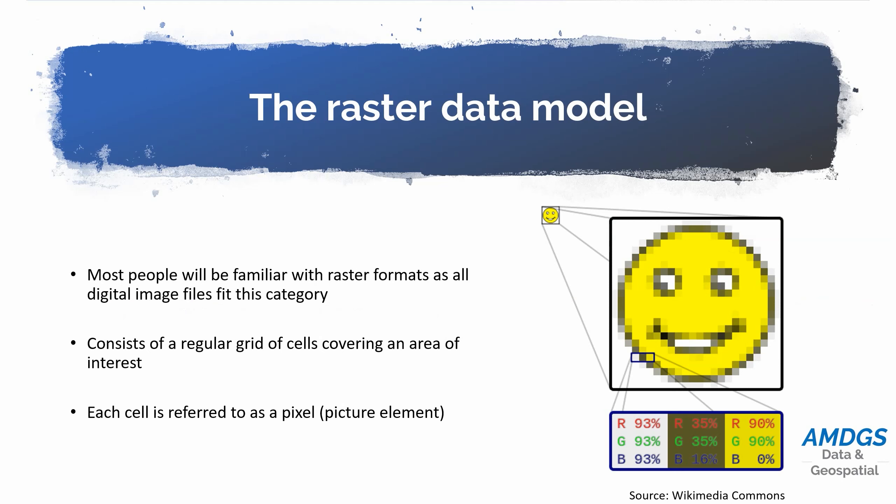So what is raster data? Most people will be familiar with this through digital photographs because it's exactly the same. A raster file is basically made up of a grid of squares or rectangles, regularly shaped, and each of those squares or rectangles has one or more values associated with it. We refer to each of those squares as a pixel, which stands for picture element. If we take the example of a digital photo, a digital photograph has three values for each of those pixels.